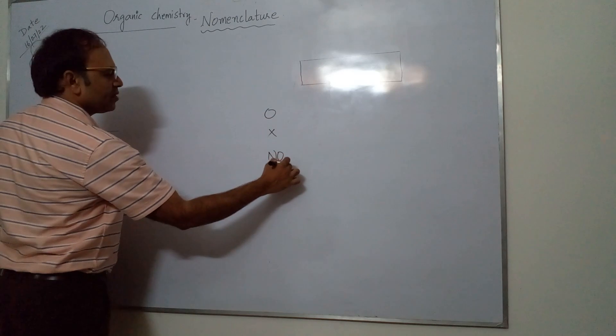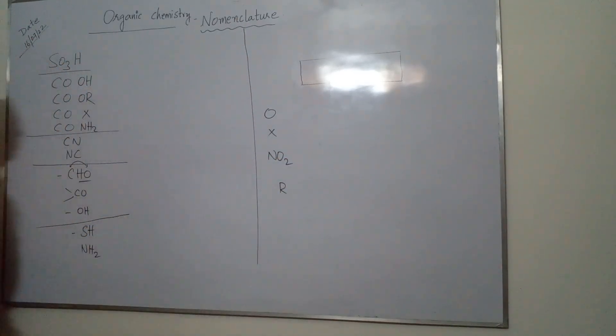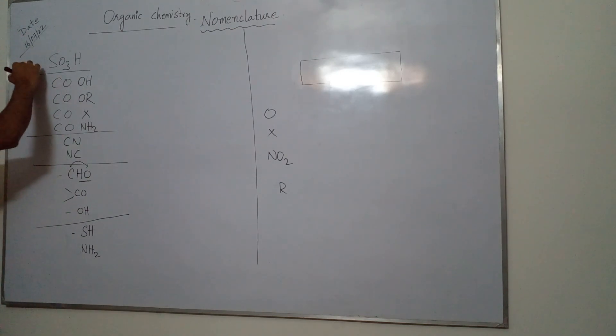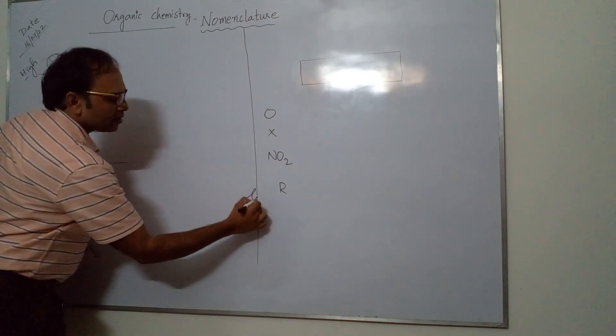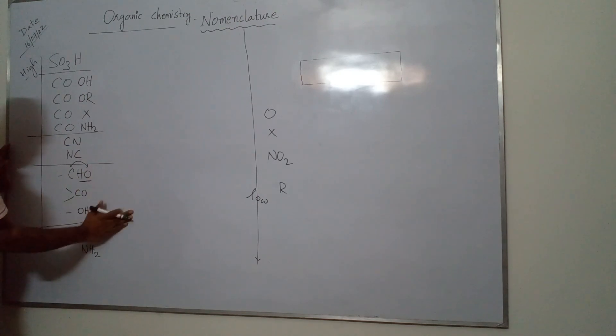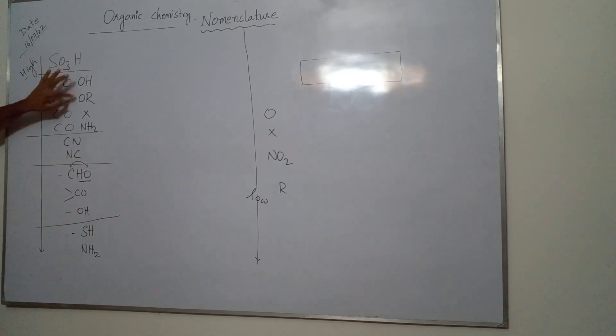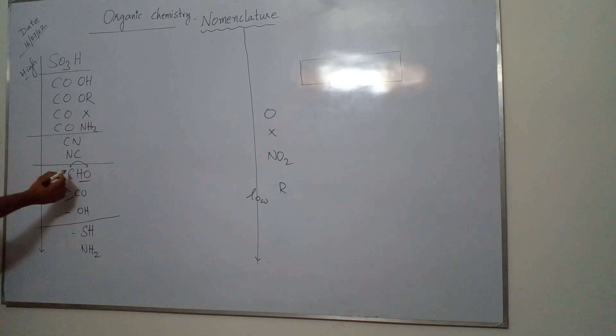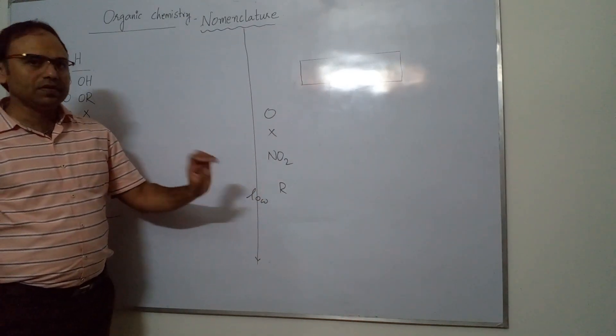To identify ketone from the list, take the first and last letters: C and O gives CO. Next, take the last two letters to get 'ol'. Then: SH, NH2. The last entries are: NO2 and R (alkyl). This gives us 16 functional groups in decreasing priority order, from SO3H as highest priority to alkyl as lowest.